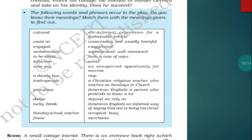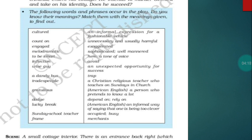Before moving ahead with the lesson, there is an assignment for you. After the completion of this lesson, you have to find out the meanings of these words and match them. See the following words and phrases that occur in the play: cultured, countdown, engaged, melodramatic, to be smart, infraction, wise guy, a dandy bus, tradespeople, gratitude, dodge, lucky break, Sunday school teacher, free. After completing this lesson, find the meanings, match them and write it in your notebook.